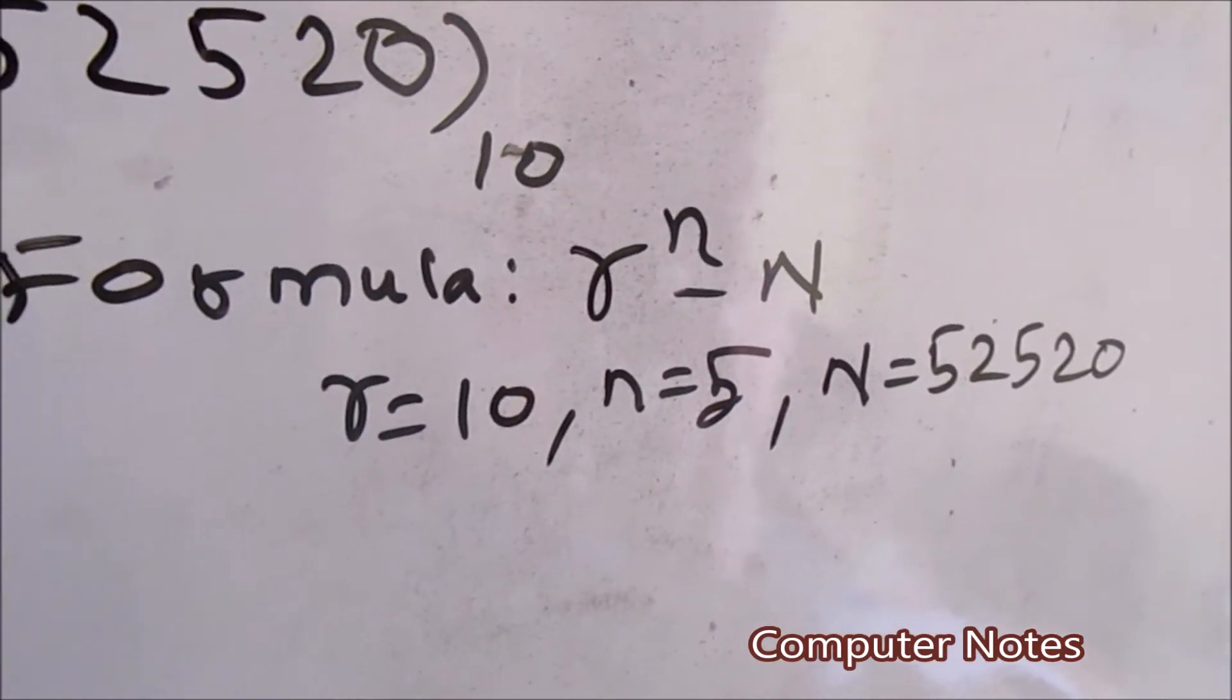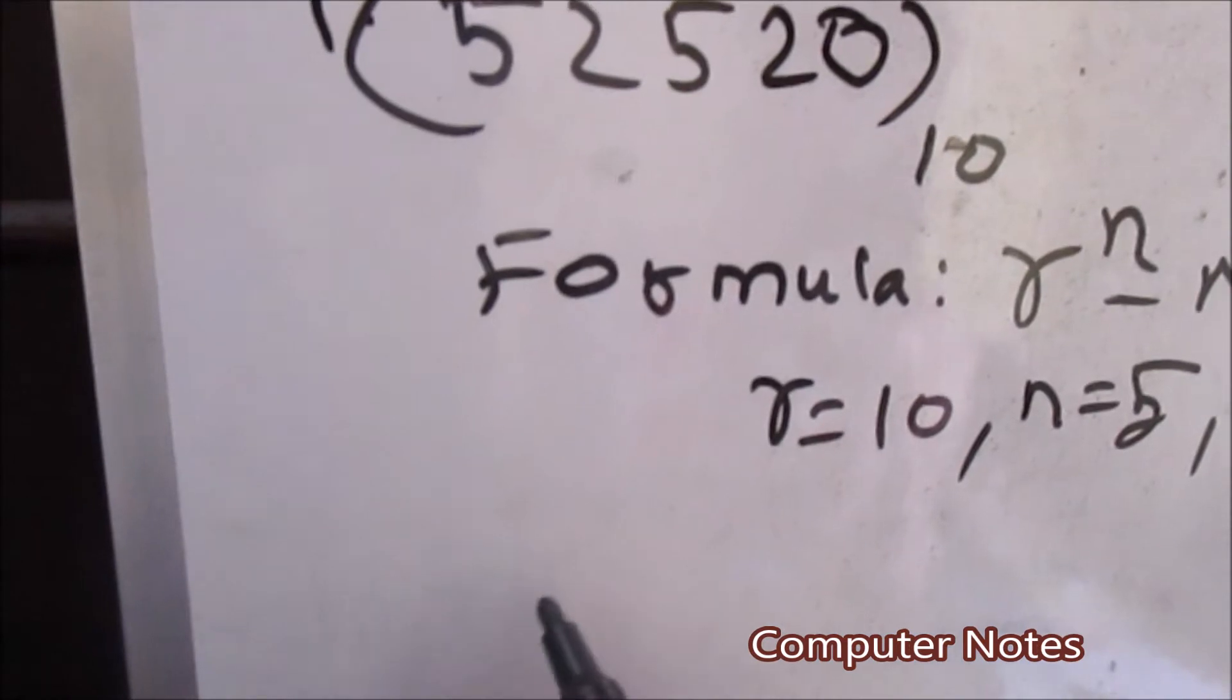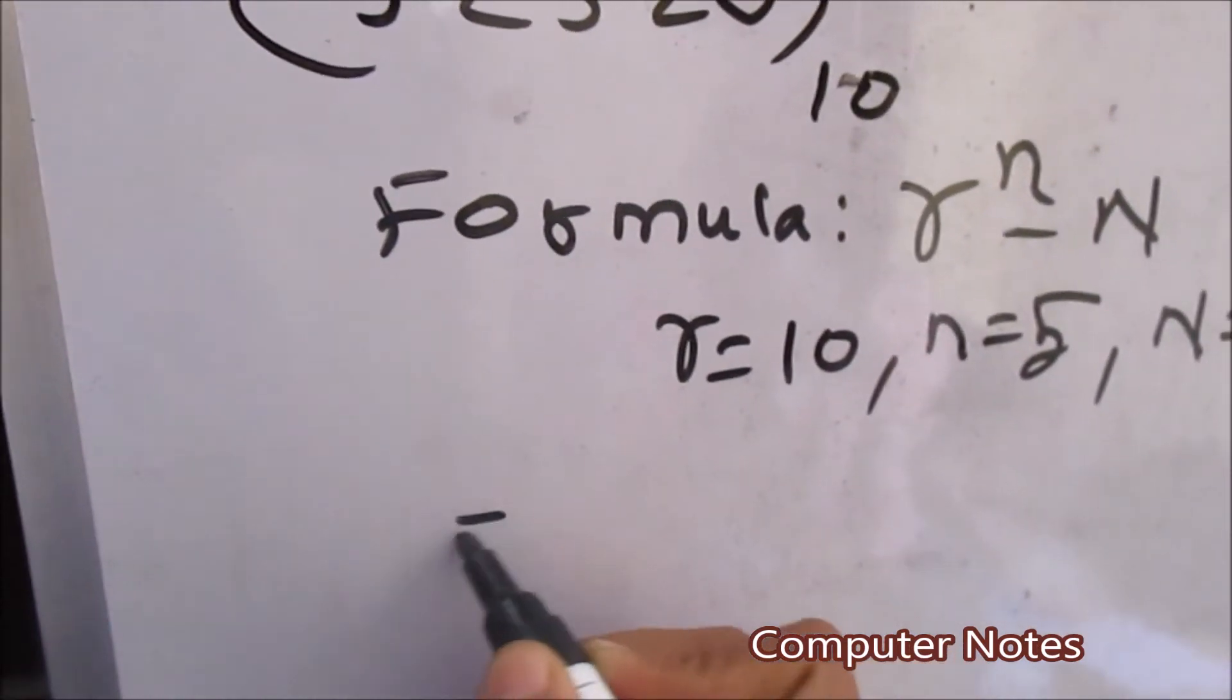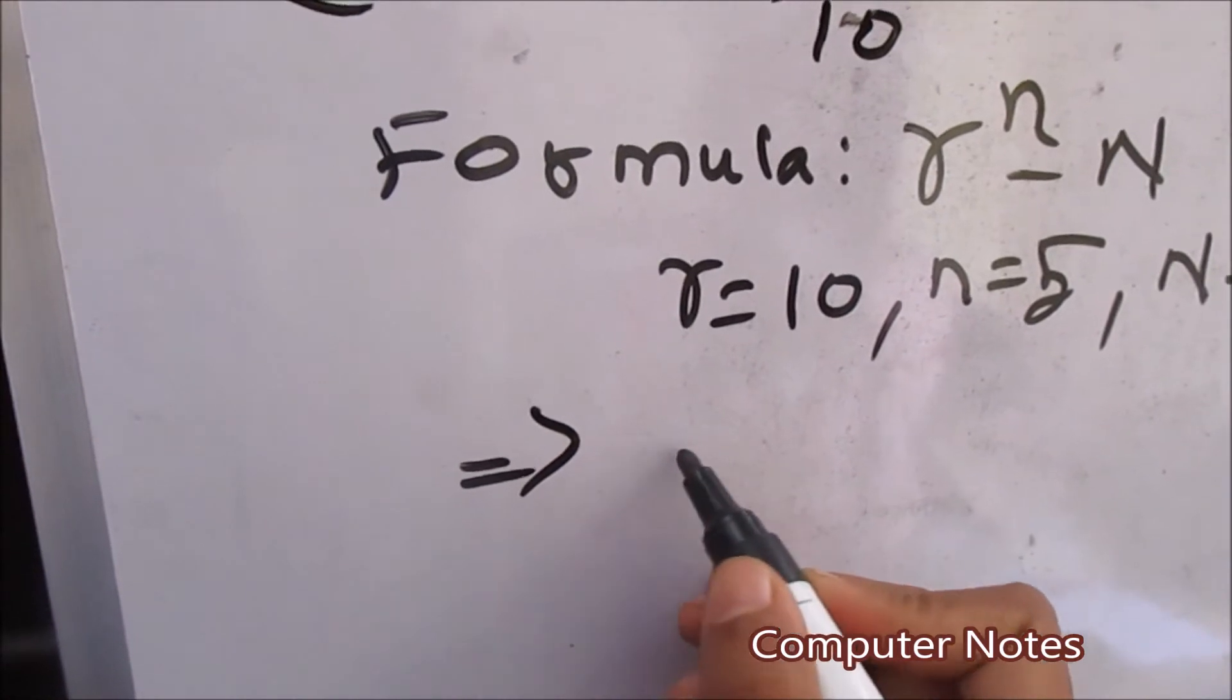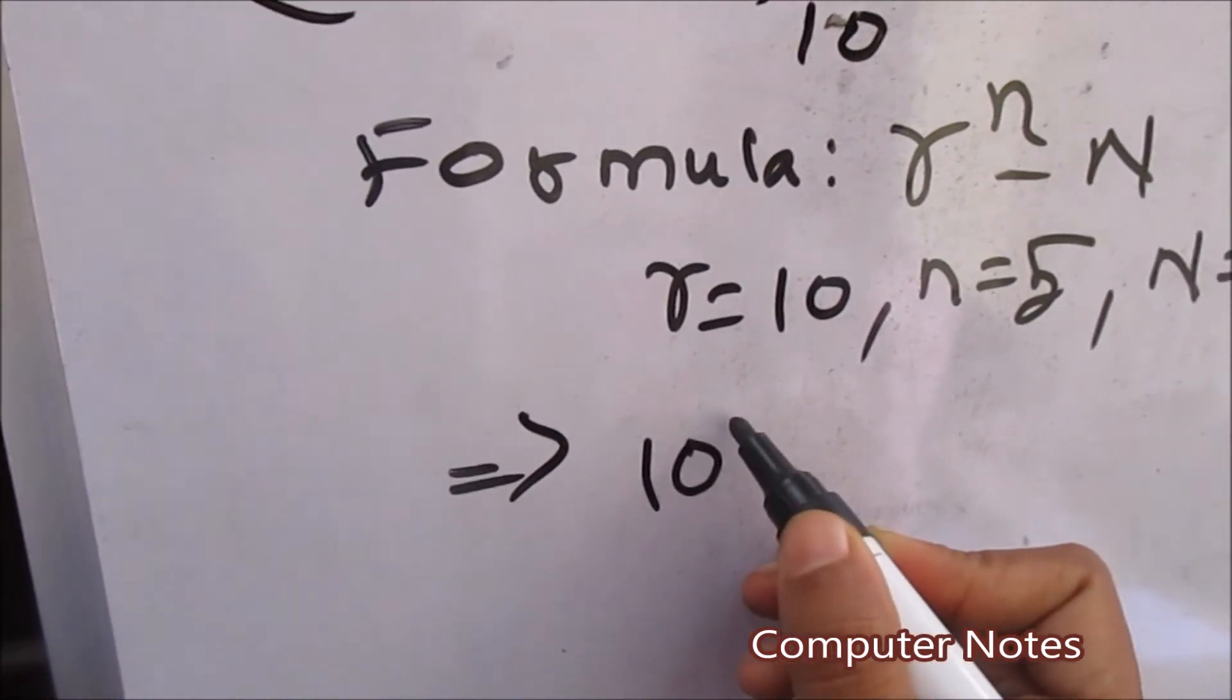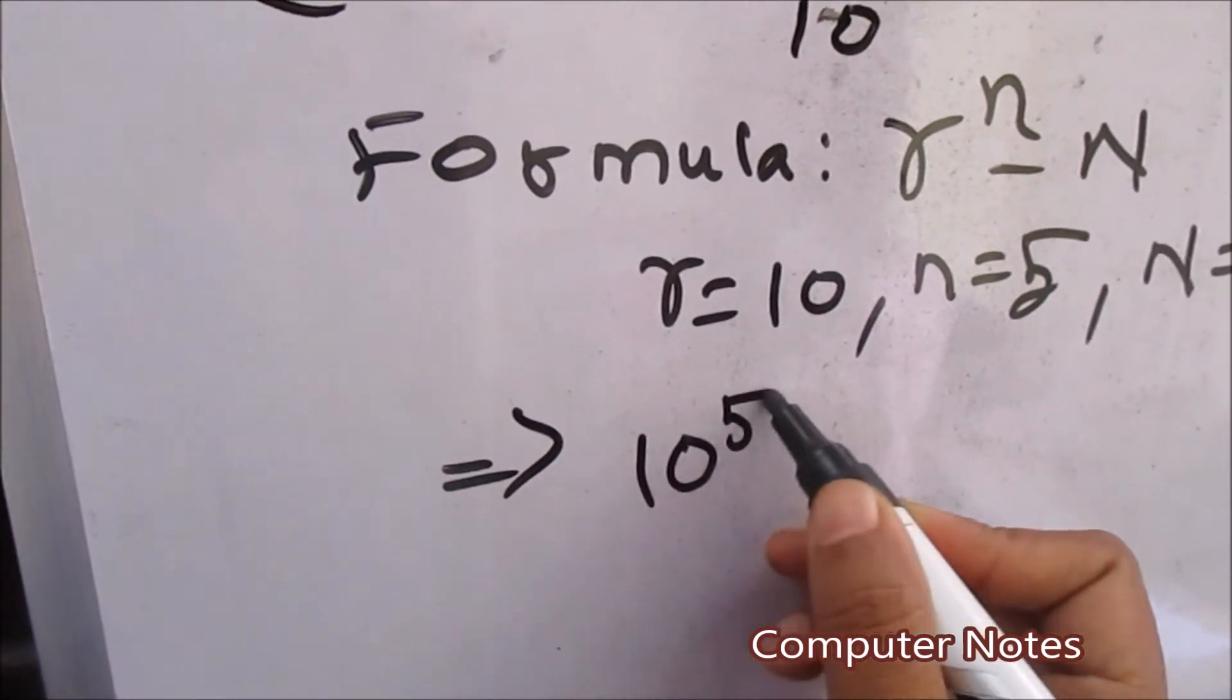I hope you are very clear till now. Then after that we will solve this formula using this formula. Here, small r value is 10 power n value is 5, minus N which is 52520.